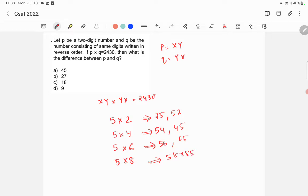So we'll check each option first. So 25 into 52. 25 into 52 is 1300. So it's not 2430. So this is wrong.